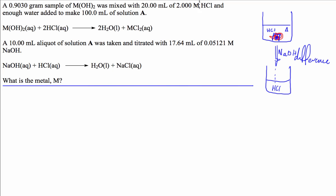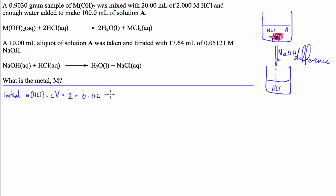So what we're going to do is calculate the initial number of moles of hydrochloric acid before we add it to the sample. So initial HCl is going to be equal to concentration times volume, which is equal to 2 moles per litre times 0.02 litres, and that gives us 0.04 moles.